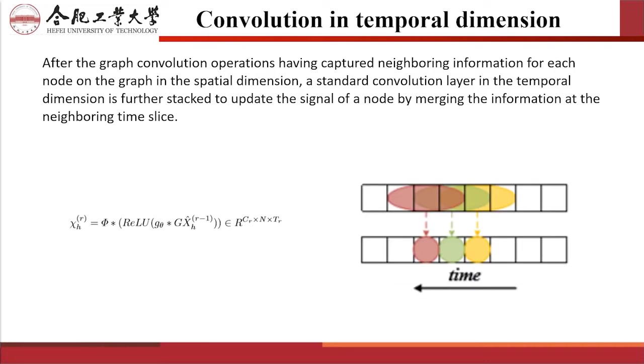After the graph convolution operations have captured the neighborhood information for each node on the graph in the spatial dimension, a standard convolution layer in the temporal dimension is further used to update the signals of a node by merging the information at the neighborhood time slice.